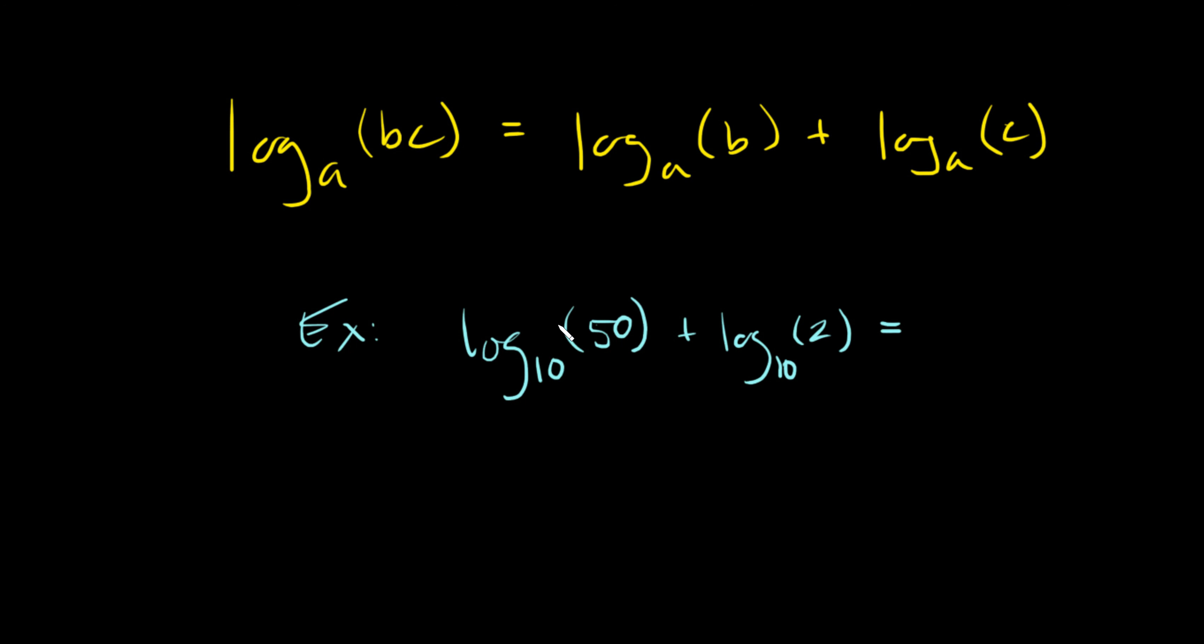And remember what logs are saying there, there's like a question. It's like, what power would you have to raise 10 to to get 50? And if you think about it for a little bit, probably not like an easy number. We know 10 to the first is 10, 10 squared is 100, so 50 somewhere between 10 and 100, which means the exponent would need to be somewhere between 1 and 2. Same thing, what power would you have to raise 10 to to get 2? It's not so obvious.